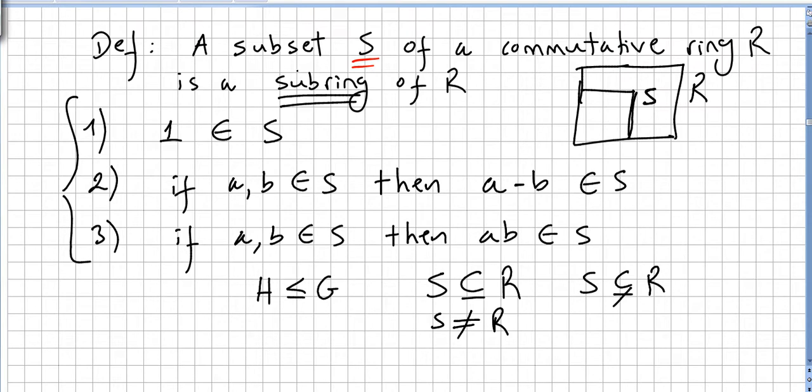I'm not going to prove it, but it's obvious that a sub-ring S of a commutative ring R is itself a commutative ring.